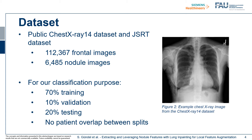We are focusing on two different datasets in this work. The first one is the ChestX-ray14 dataset and the second one the JSRT dataset. Together, we can use 112,367 frontal chest X-ray images, and 6,485 of them are nodule images. For our classification purposes, we split this big dataset into 70% for training, 10% for validation, and 20% for testing, ensuring there is no patient overlap between the splits.